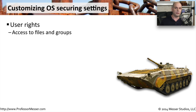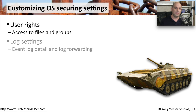For instance, the shipping and receiving department may have a certain type of access to files, while the accounting department may have a completely different access to the same files.